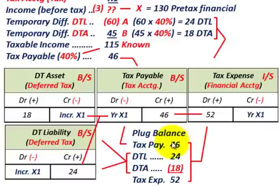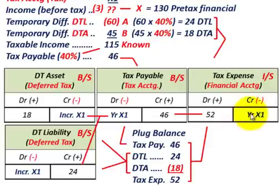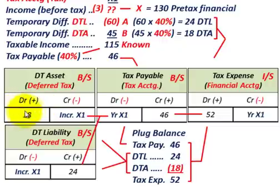To verify the tax expense: Tax Payable credit of $46,000 plus Deferred Tax Liability credit of $24,000 minus Deferred Tax Asset debit of $18,000 = $52,000. The deferred tax asset reduces taxes, while the deferred tax liability increases them. The net balancing debit of $52,000 is our tax expense for year X1.